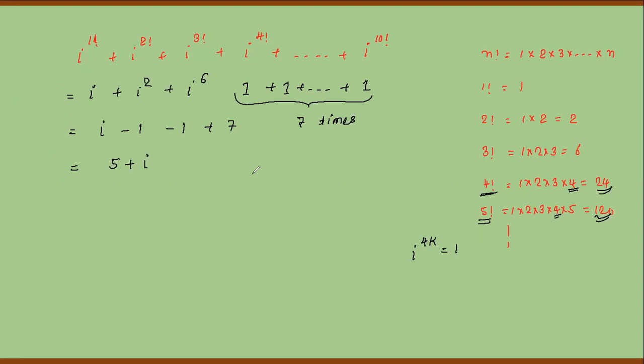So we used factorials in iota's power. Throughout, we used just two key concepts: first, that iota^(4k), iota^(4k+1), iota^(4k+2), and iota^(4k+3) give values 1, i, -1, -i respectively; and second, that the sum of any 4 consecutive powers of iota is 0. Using these, we solved all the problems.